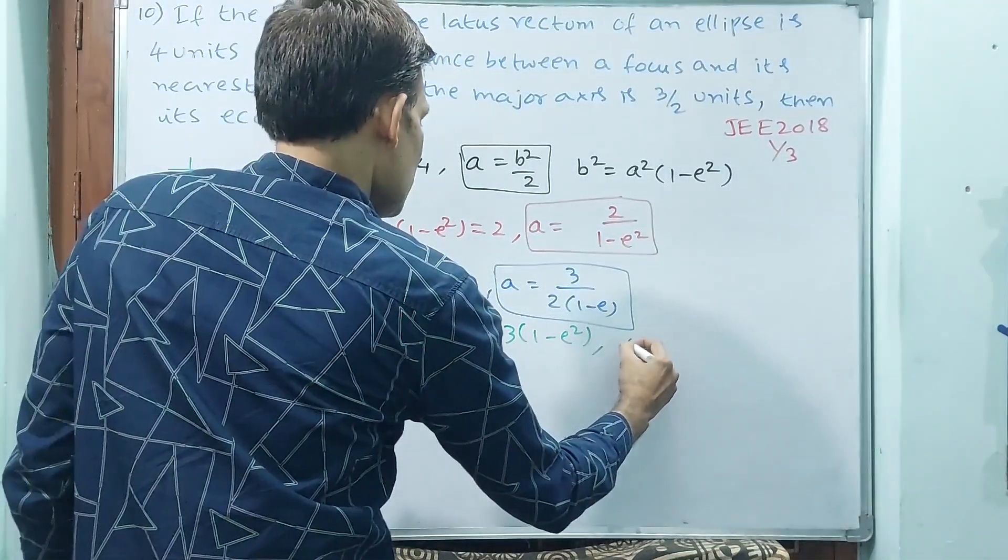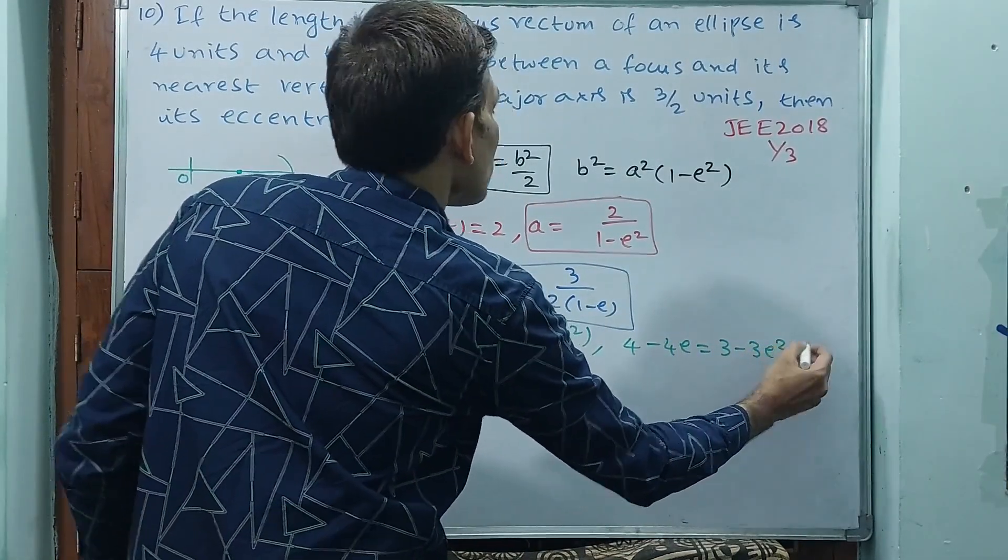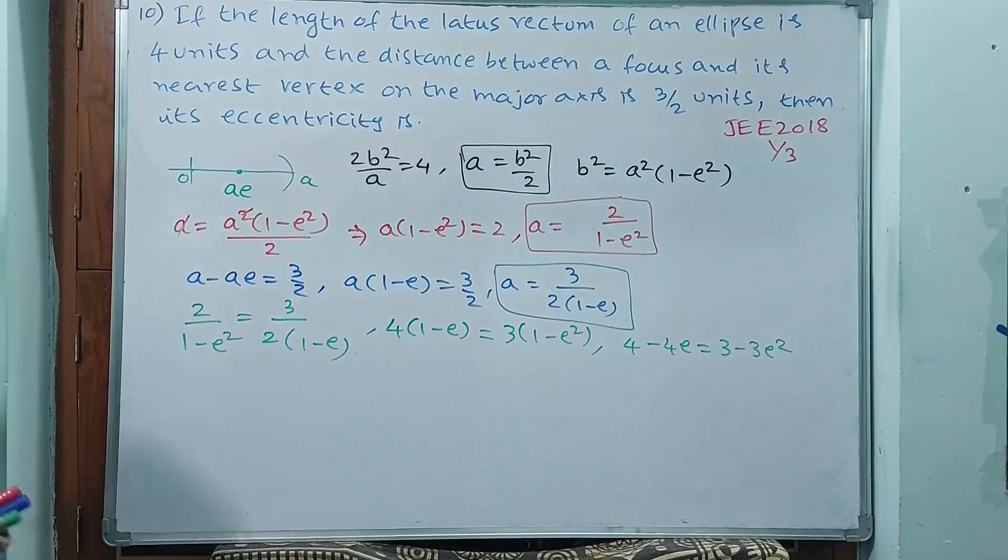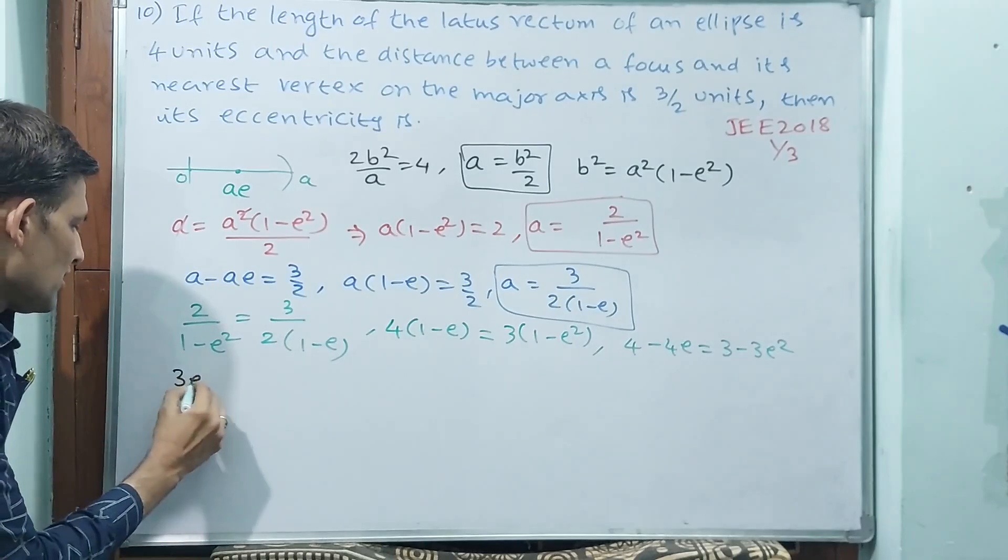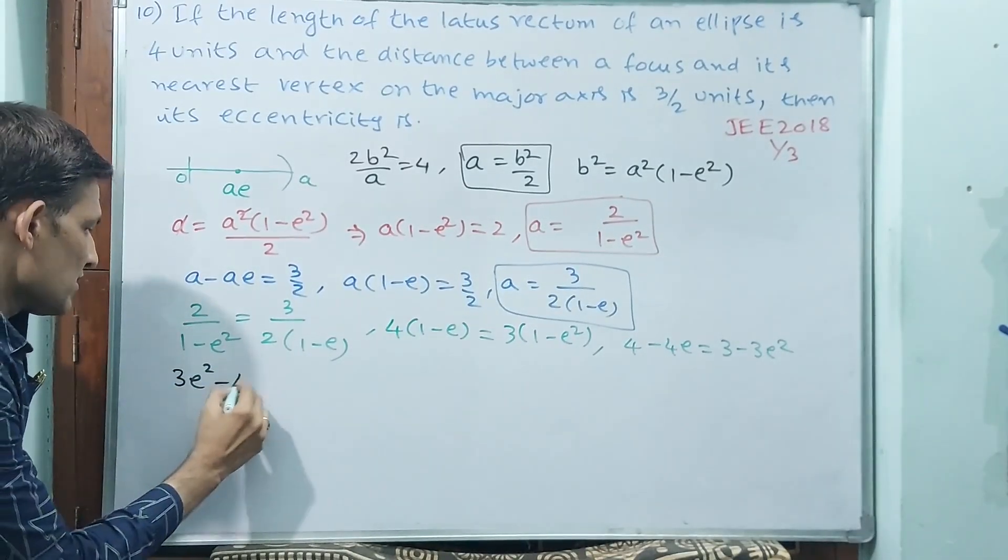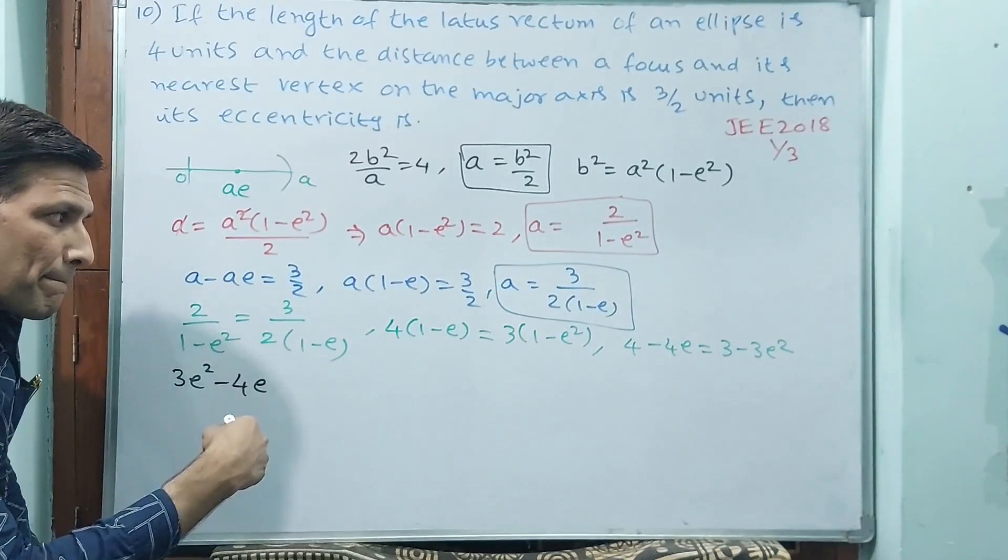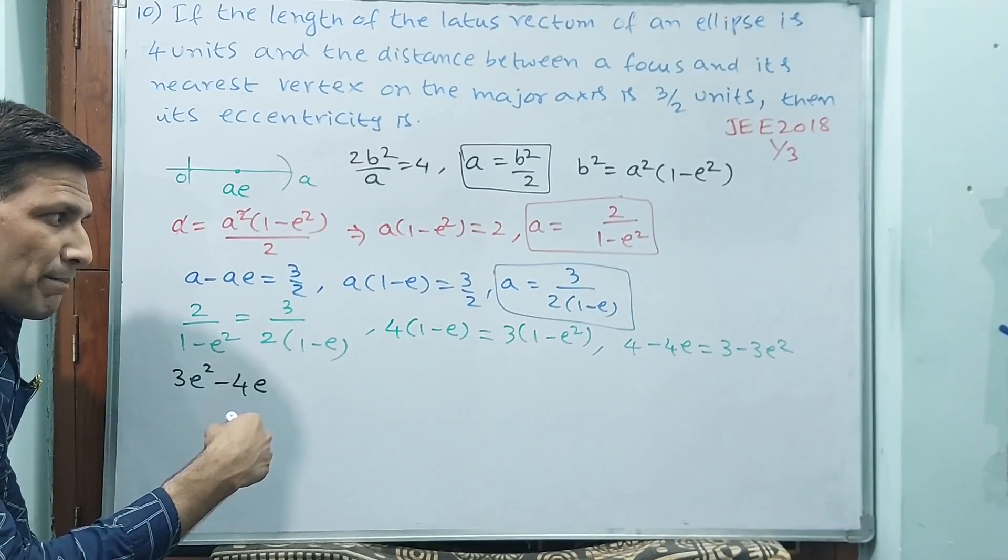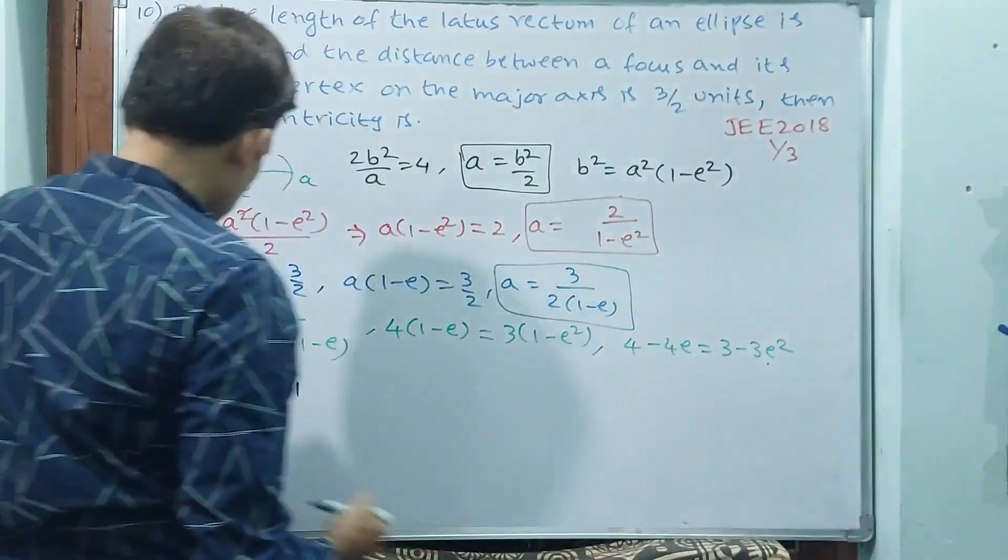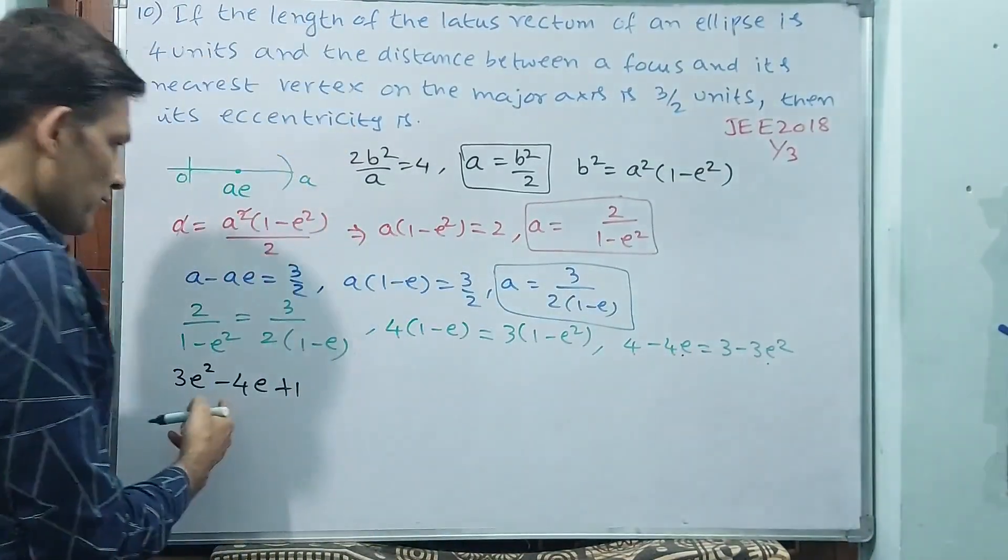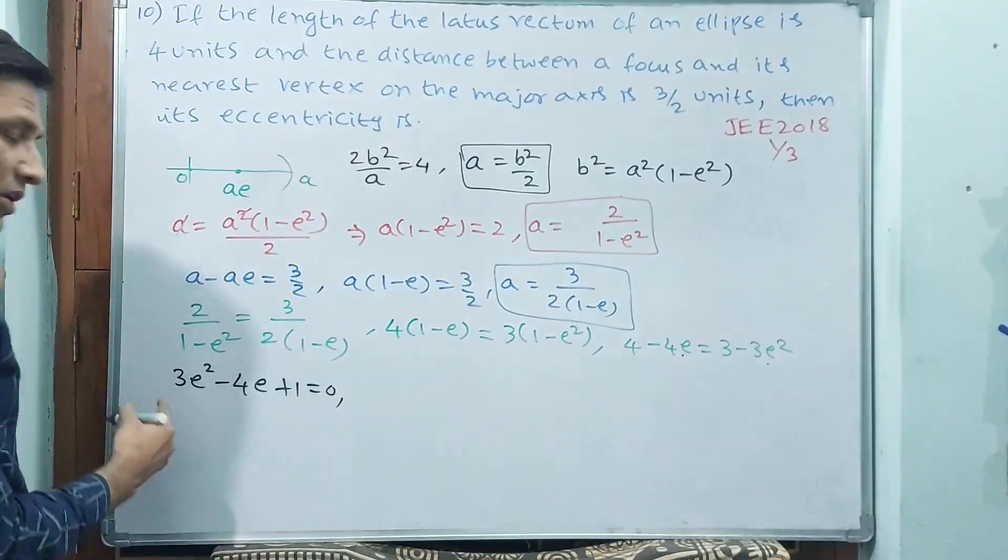That means see, 4 minus 4e is equal to 3 into 1 minus e square. Okay. Now you send 3e square this side, because you want to make quadratic equation. See, 3e square minus 4e minus 1. This is plus 3e square. This is already minus 4e. Minus 3, 4 minus 3 is 1. Is equal to 0. Now you solve this equation.